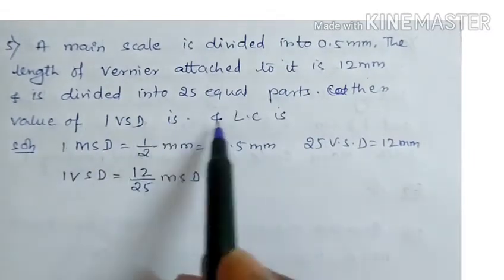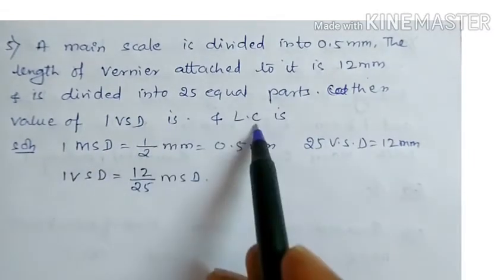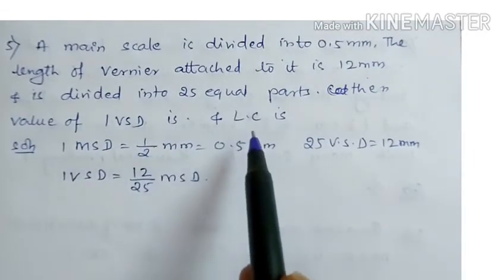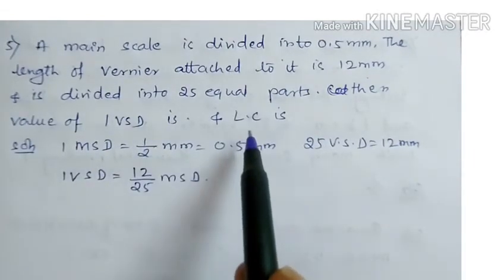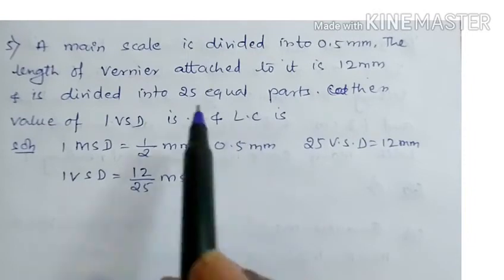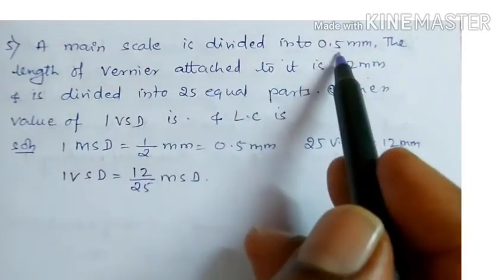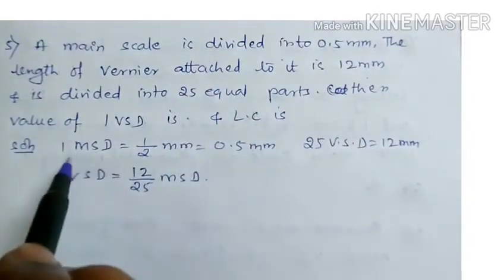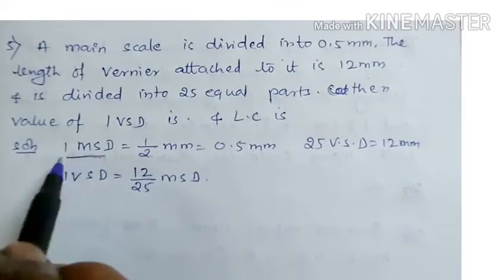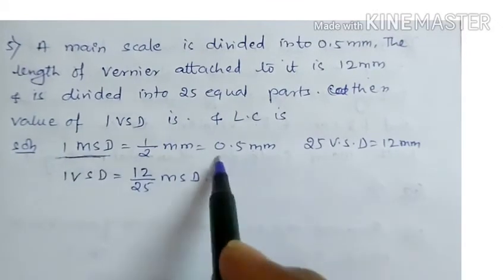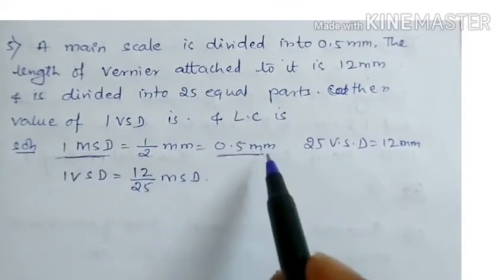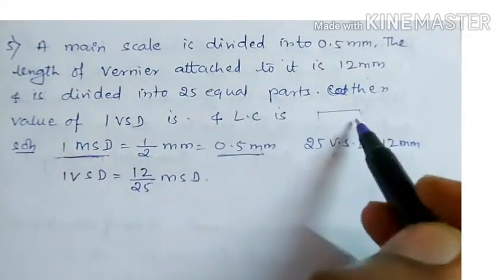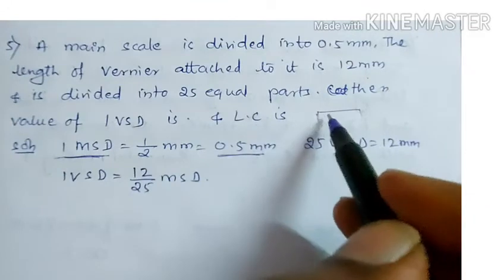A value of 1 VSD is to be found. In order to find 1 MSD, 1 MSD is given by 0.5. So 1 MSD means main scale division is 0.5 mm. Main scale 1 small division is 0.5 mm.